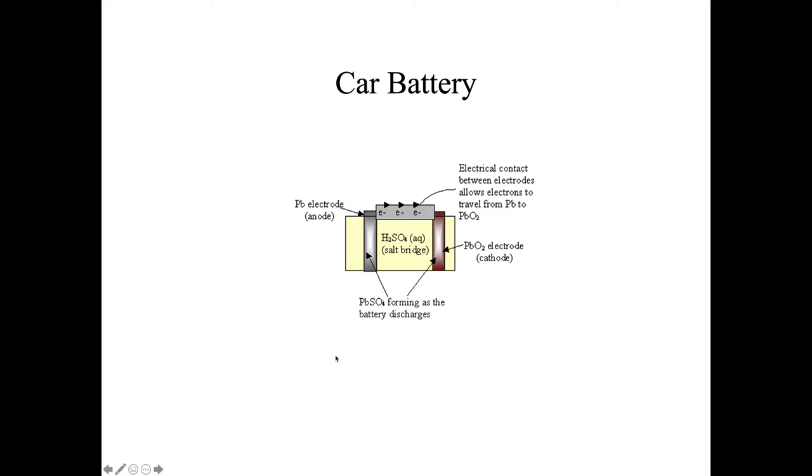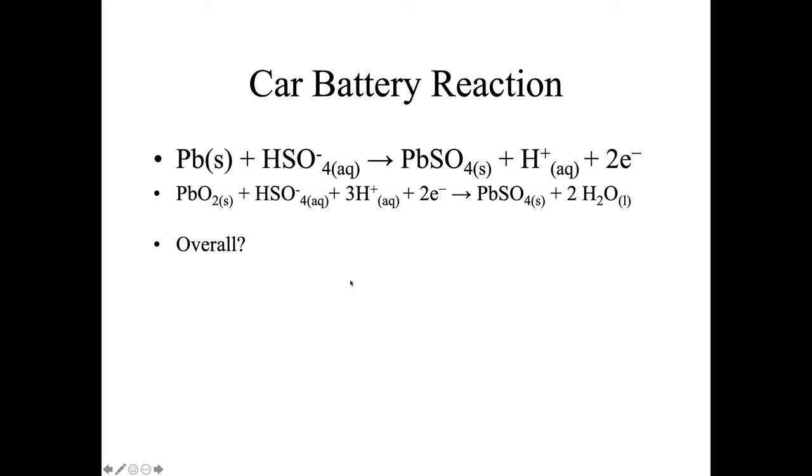So a car battery is a lead-hydrogen battery. Here's the, you tell me, is this an oxidation or a reduction? That's right, it's an oxidation. So lead is being oxidized to lead sulfate. And here, lead is both being oxidized and reduced. Actually, the lead is being reduced here. So this is a lead with a plus four charge, and this is lead with a plus two charge. So overall, hit pause and try it on your own. See if you can write the overall reaction.